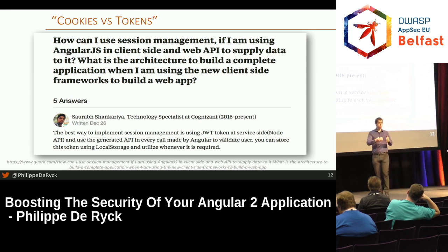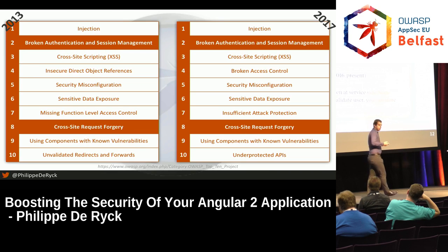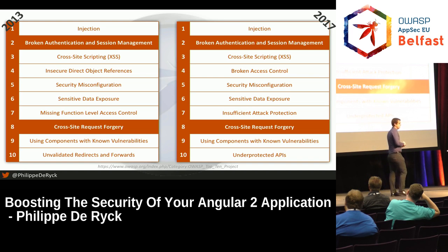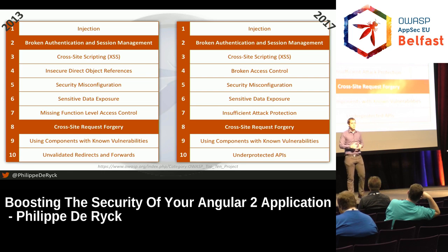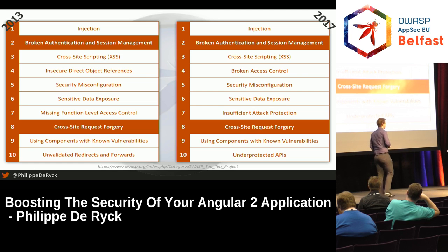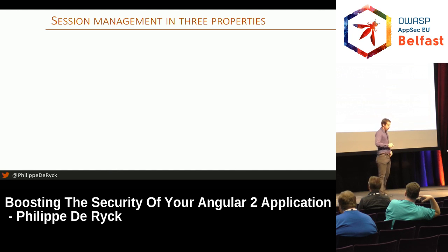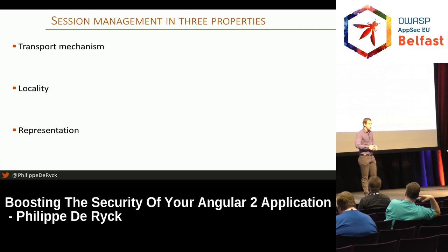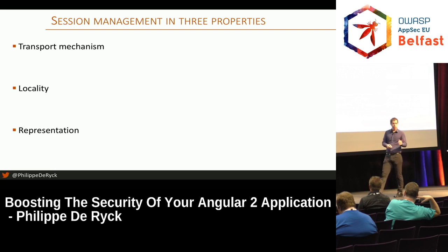Session management is kind of important. These are two versions of the OWASP Top 10. The reason I'm showing this is because session management is in there — broken authentication and session management — showing that it's a hard problem to get right. There's also a second attack called cross-site request forgery, which is especially related to cookie-based session management. To me, session management is not about cookies versus tokens. There are three properties that impact the way your system works: the transport mechanism, locality of the session management, and representation of the session data.